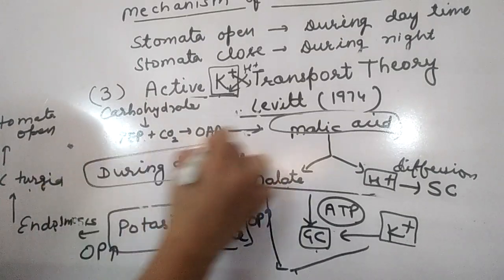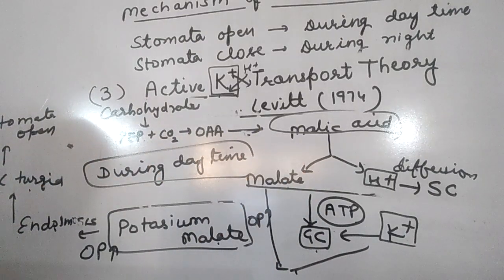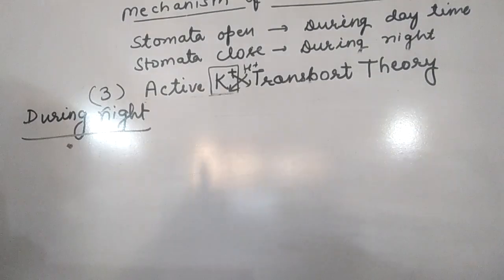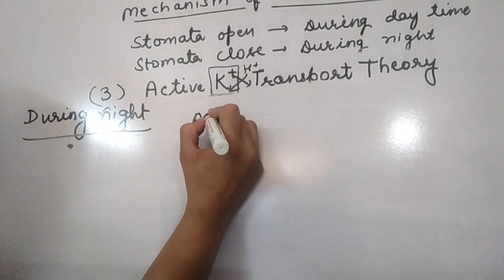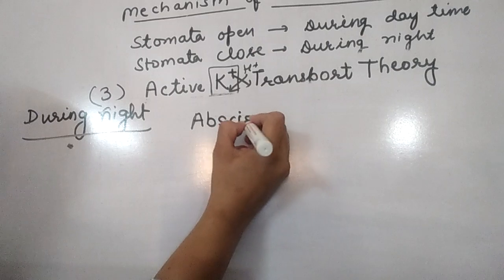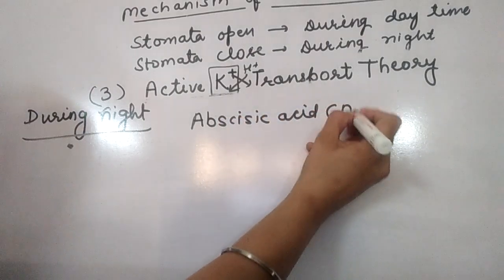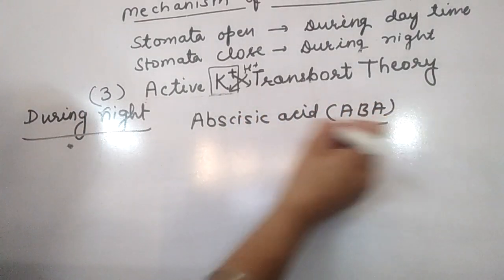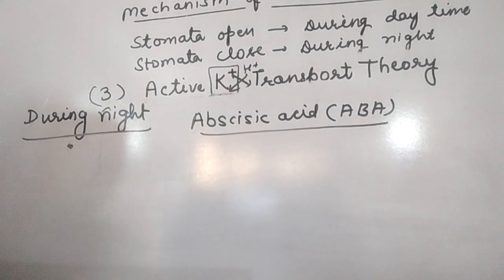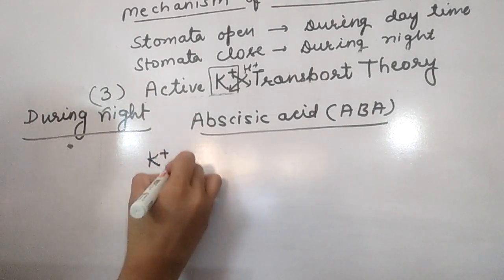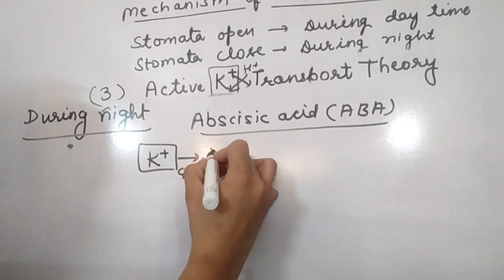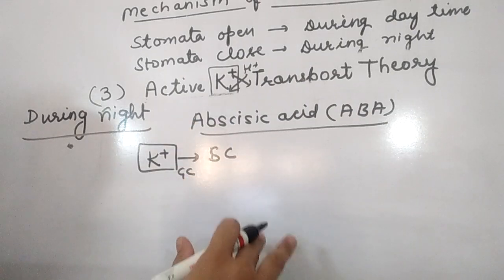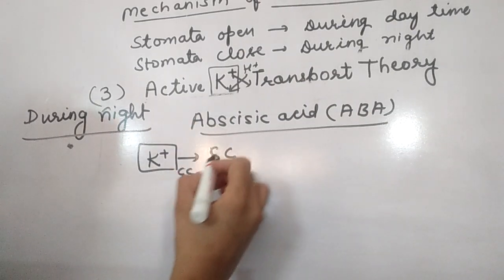During night or under stress, abscisic acid (ABA) is active. ABA stimulates potassium ion transport out of the guard cell — potassium efflux occurs from the guard cell into the subsidiary cell.